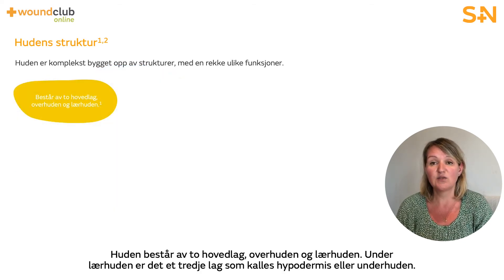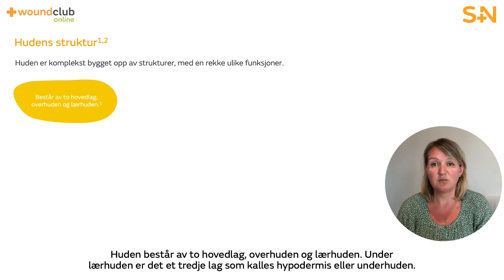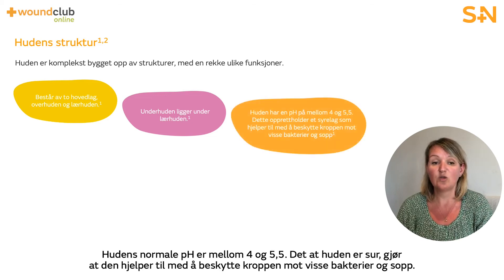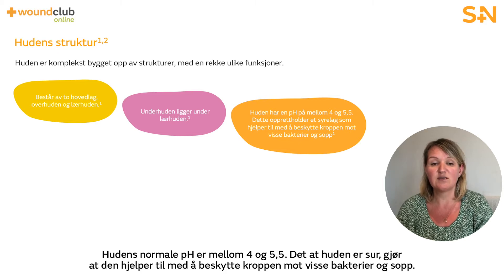The skin is composed of two main layers: the epidermis and dermis. Beneath the dermis is the third layer called the hypodermis or subcutaneous layer. The normal pH of the skin is between 4 and 5.5, and being acidic in nature assists with protecting the body from certain bacteria and fungi.